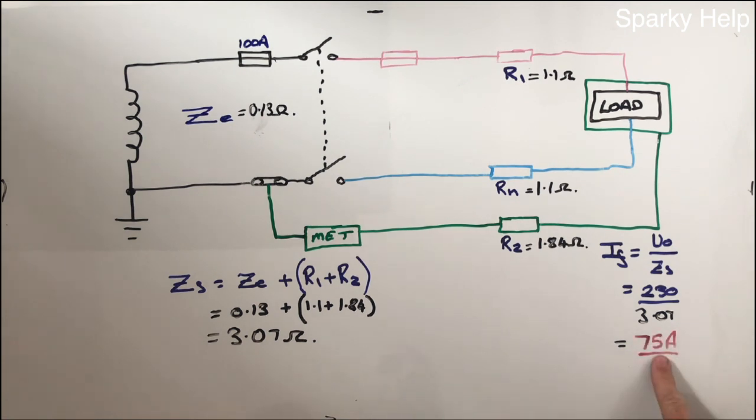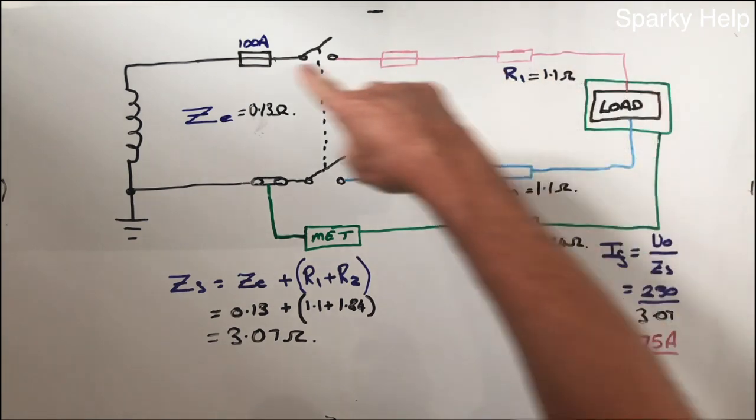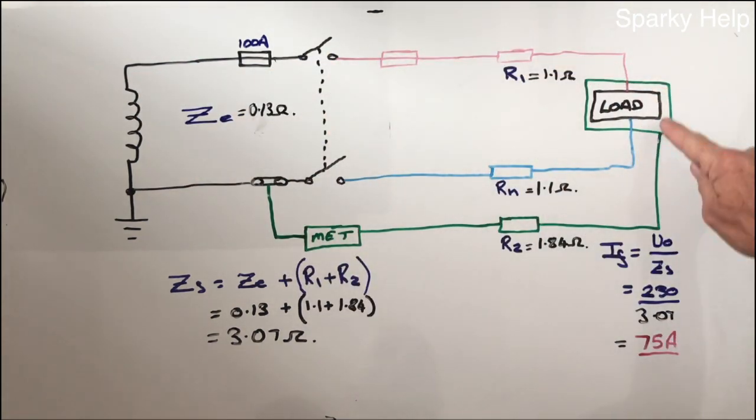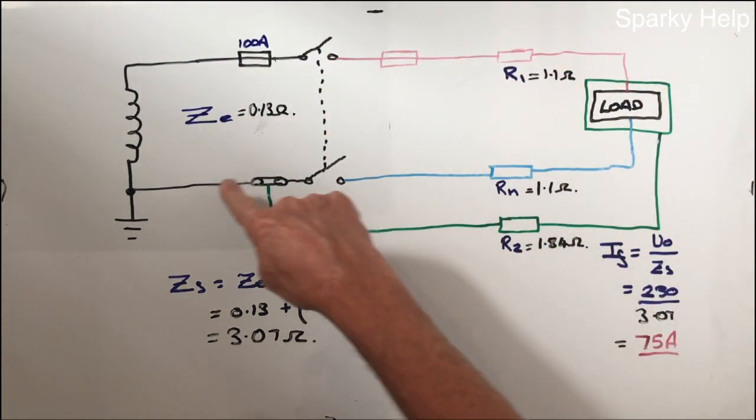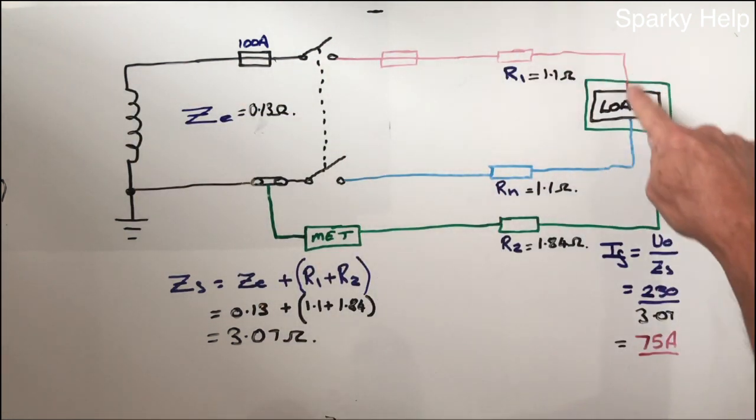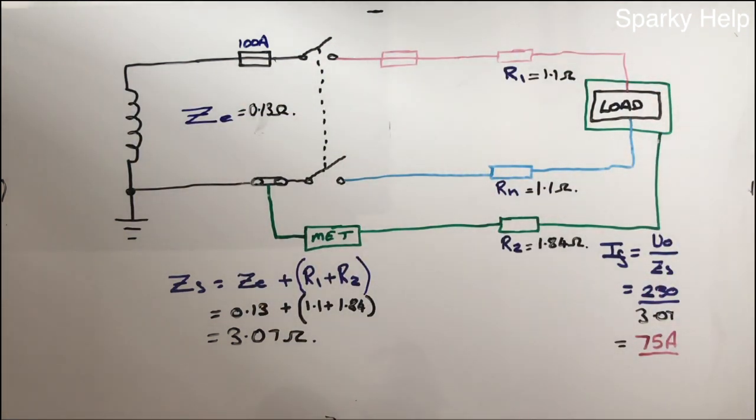We will get a value of 75A will flow round this particular path, the earth fault loop path.